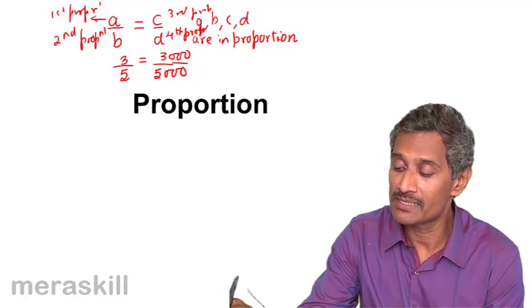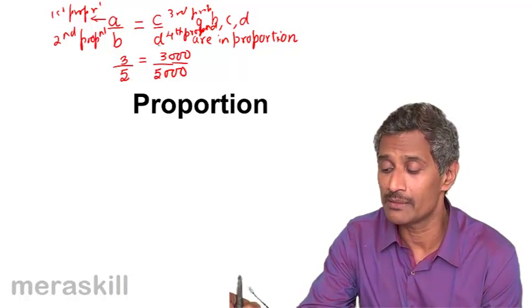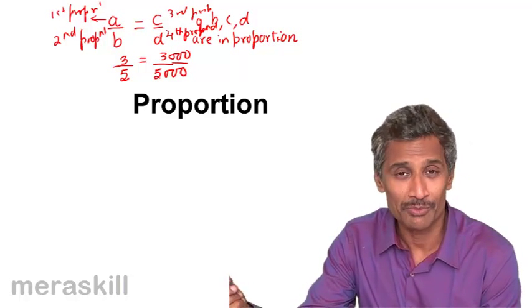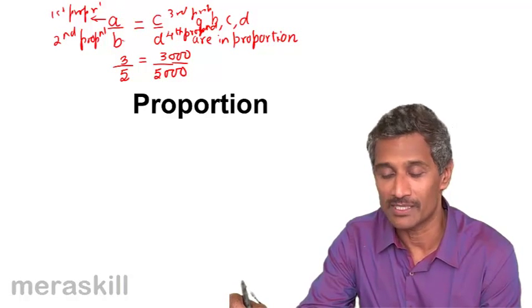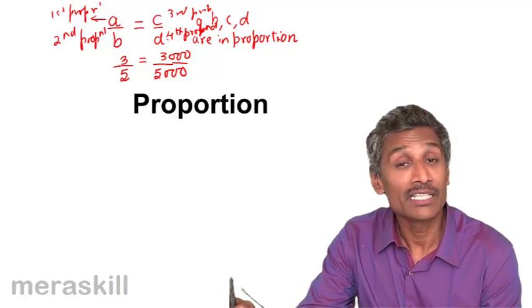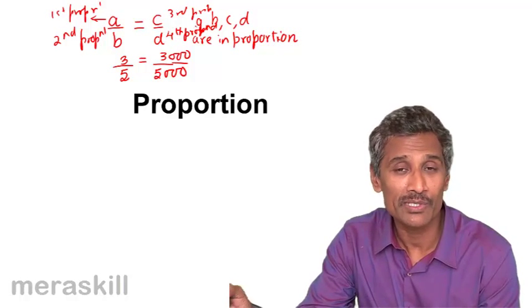So, A, B, C and D, in which if A by B is equal to C by D, we say A, B, C and D are in proportion. A is the first proportional, B is the second proportional, C is the third proportional, D is the fourth proportional, as simple as that.